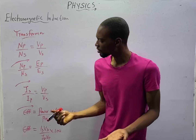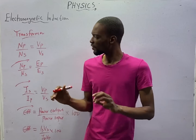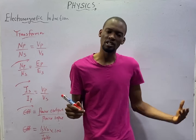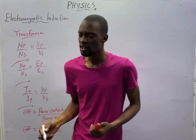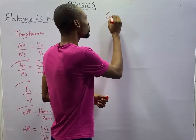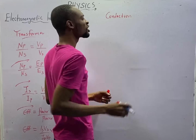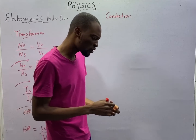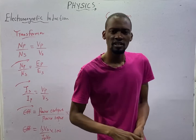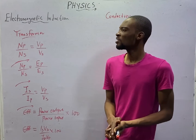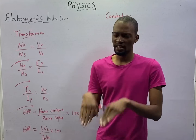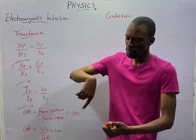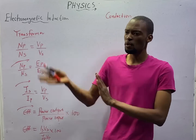If the number of turns in the primary is the same as the number of turns in the secondary, it will not act as a transformer — it will act as a mere conductor, and the total current entering will be the current leaving. Now, if the number of turns in the primary are more than that in the secondary, the transformer will step down. If the secondary turns are more than the primary turns, it will step up the voltage.